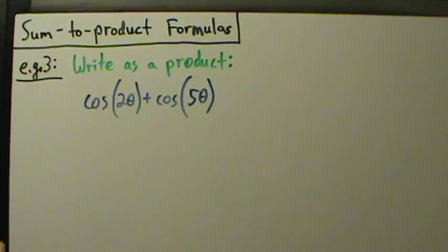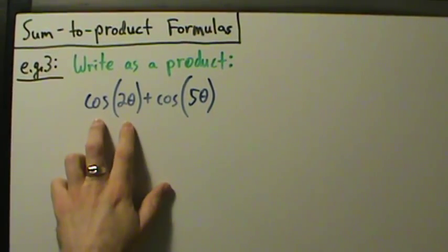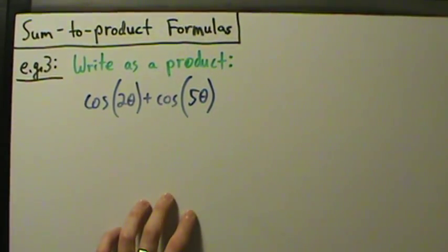Here's example three of using the sum to product formulas. We have cosine of two theta plus cosine of five theta, and we want to write that as a product.